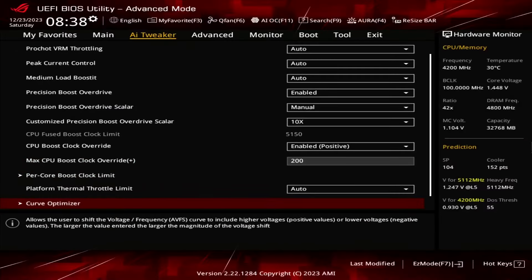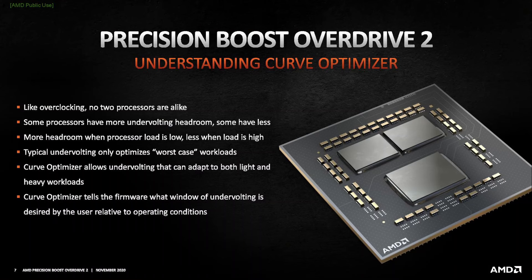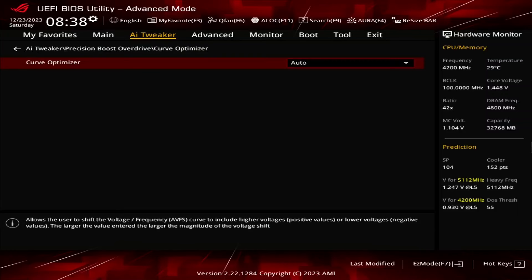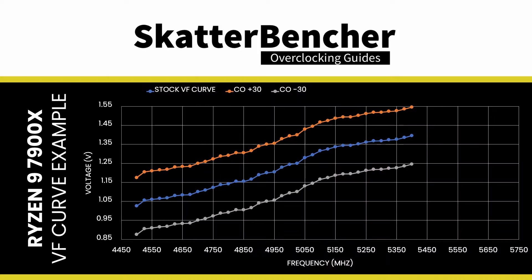Enter the Curve Optimizer submenu. Here's where the real magic happens — Curve Optimizer allows us to fine-tune the voltage-frequency curve for each core in a positive or negative direction. Each step represents around 5 mV. Set Curve Optimizer to Per Core. Set Core 0 through Core 7 Curve Optimizer Sign to Negative. Setting a negative offset means the CPU will use less voltage for a given frequency and boost to a higher frequency at a specific voltage.